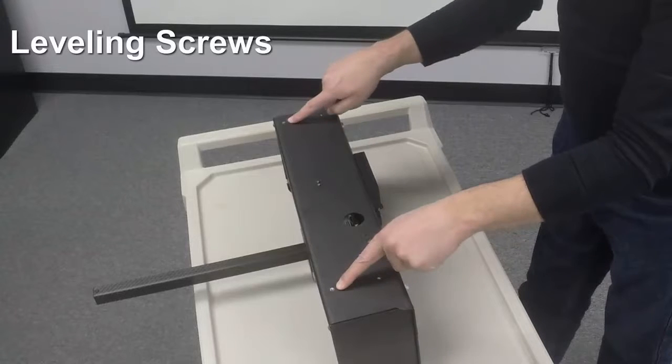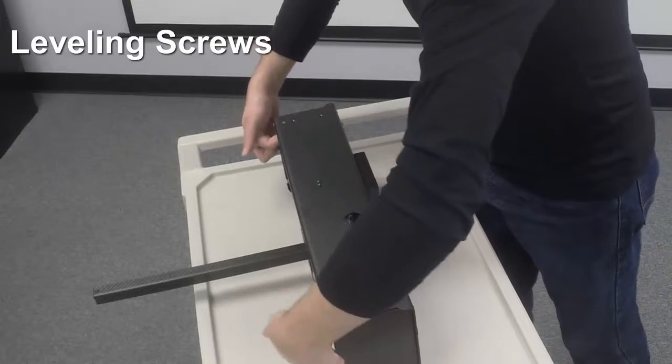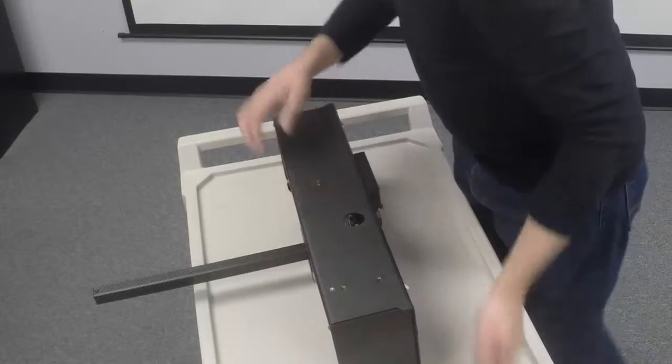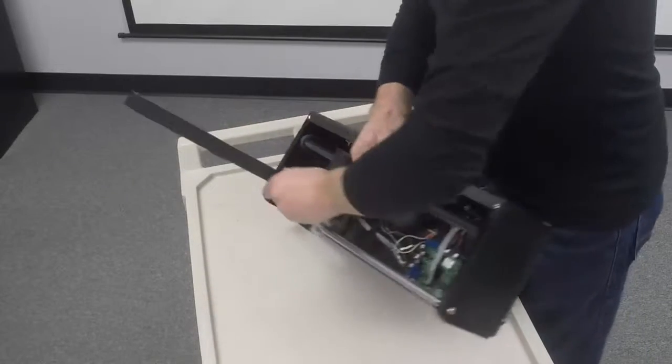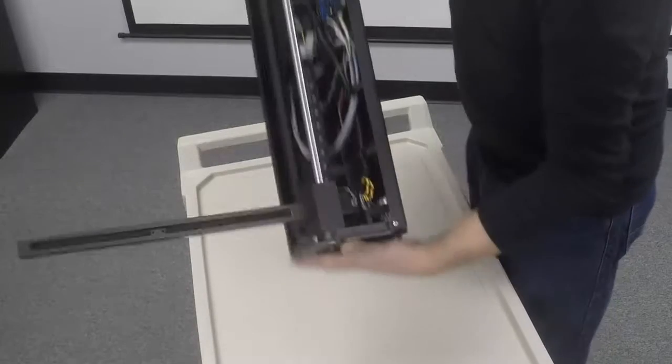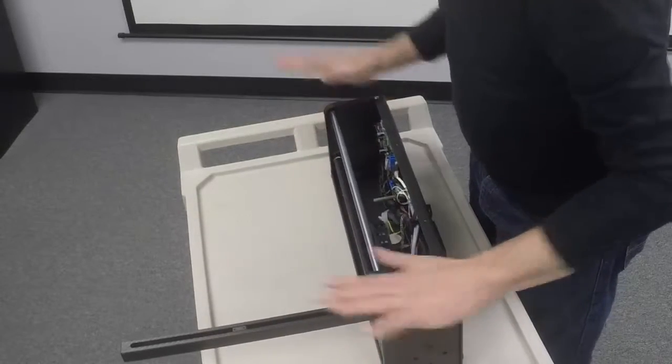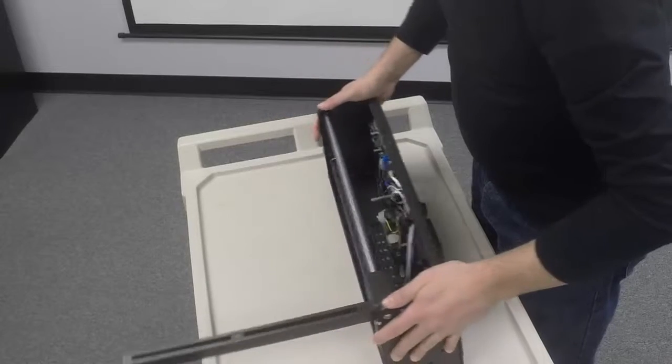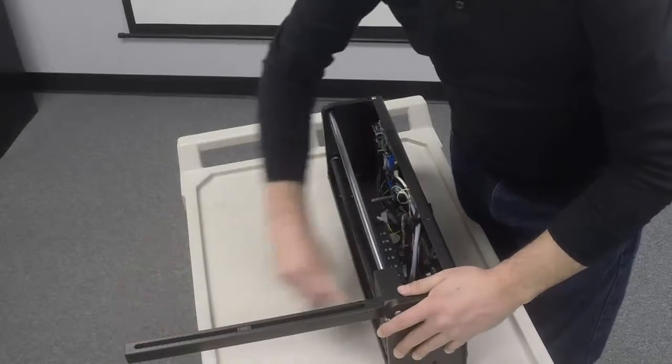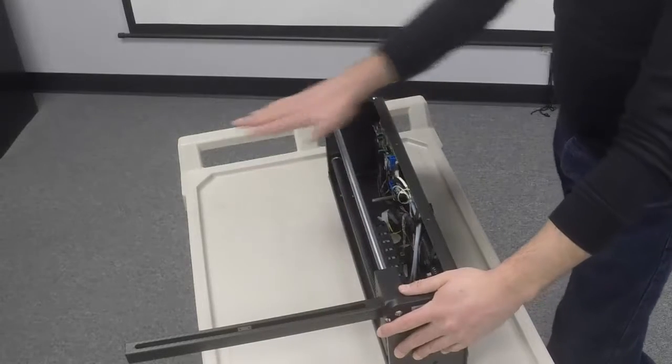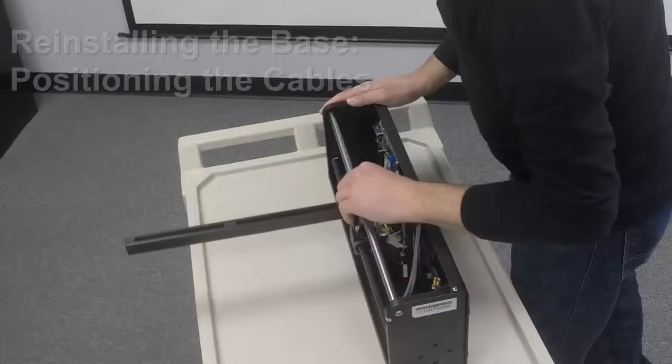On the top here, you can see the threads of the two leveling screws. These two points correspond to thumb screws on the bottom. The leveling screws put pressure on the base so that the alignment is parallel between the head and the base in the Y direction. These screws normally do not need to be adjusted.